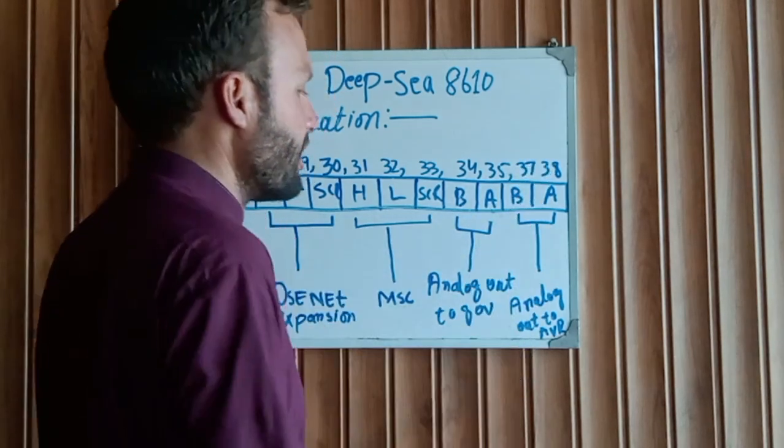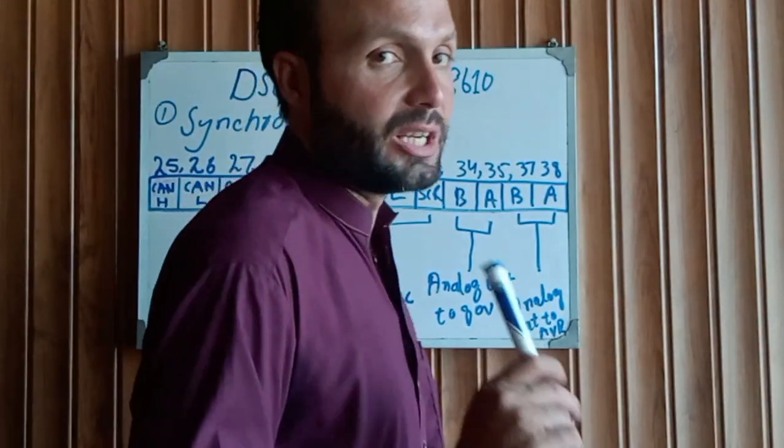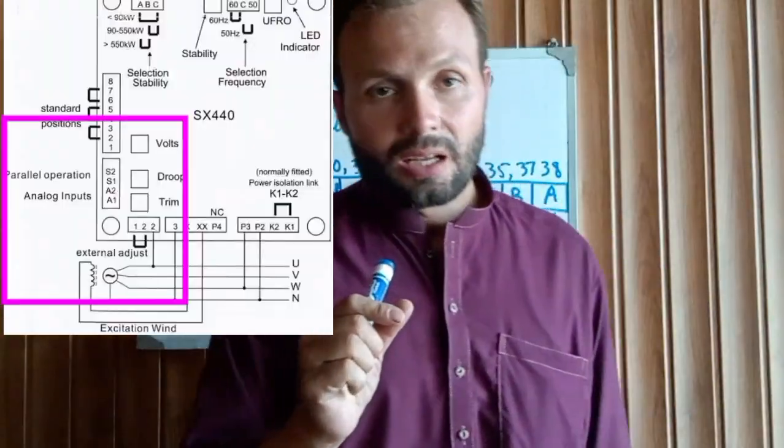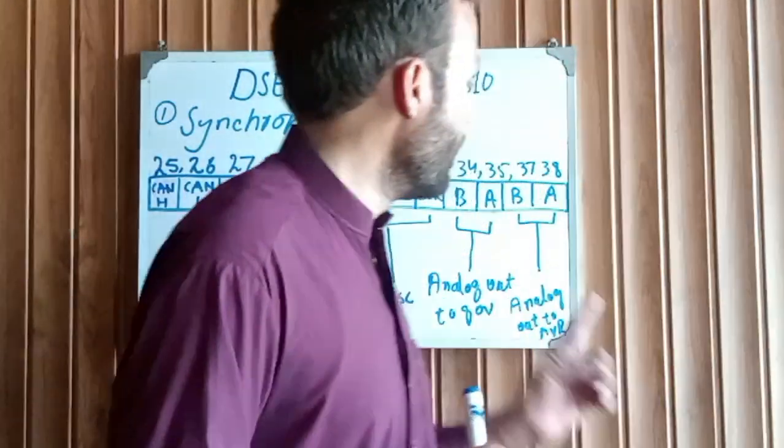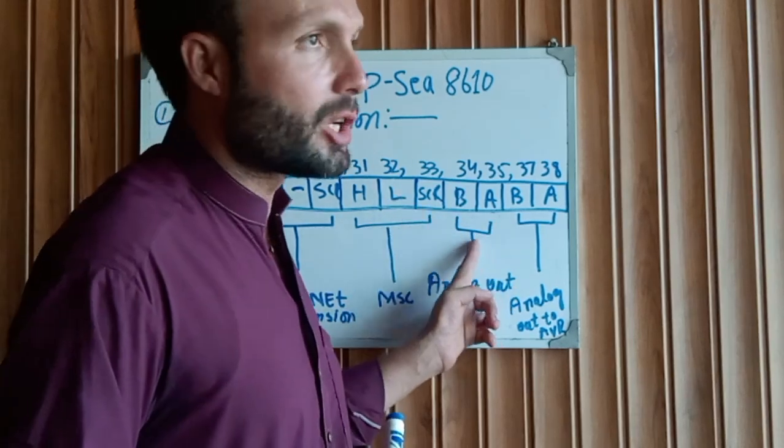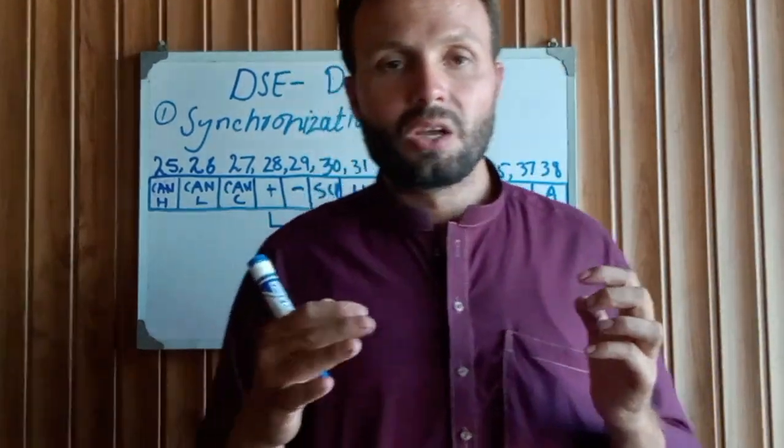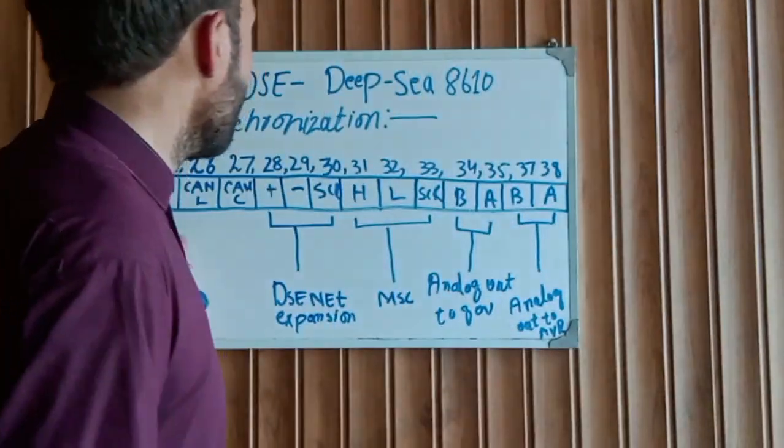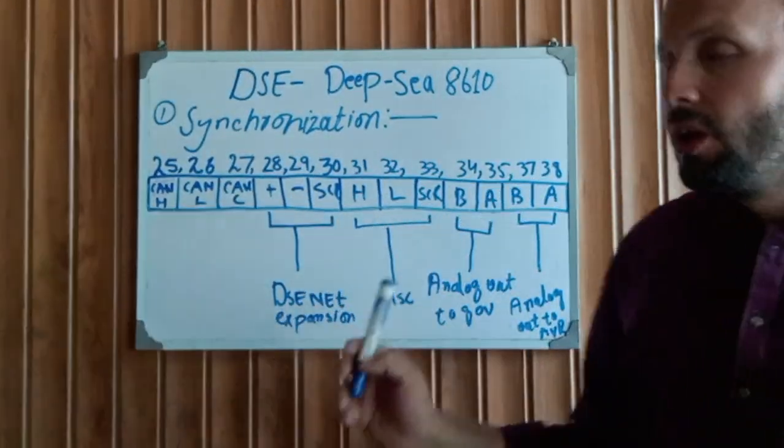Finally, we're reaching the last pin connection, which is more important for synchronization. Pin 37 and pin 38 - analog out to AVR. This is a maximum 5-volt DC output. This 5-volt DC goes to the area where we put the potentiometer to control remotely the voltage stability to increase and decrease the generator voltage. But here, this controller automatically controls the governor system and the AVR system to match all generator voltage and frequency to each other and synchronize all generators. I hope you understand briefly the complete DSE controller wiring and synchronization system.